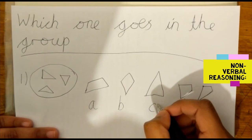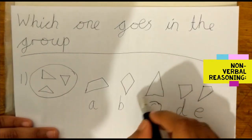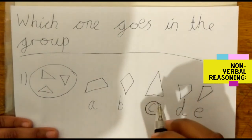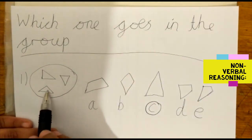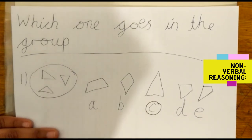So the answer is C, because it is the only one with three sides, and in the group the shapes are three-sided.